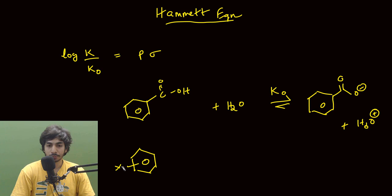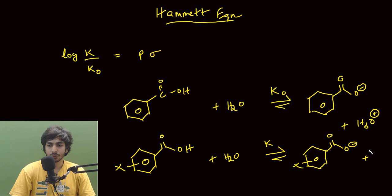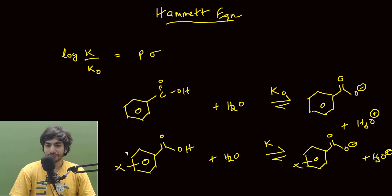Now if I add any substituent to the aromatic ring — I am not specifying at what position or what exactly the substituent is — when I try to measure its pKa, the equilibrium constant is now k, whereas earlier it was k₀. So for simple benzoic acid the value is k₀, and when we have some substitution, the new equilibrium constant is k, and again it will dissociate into the corresponding anion.